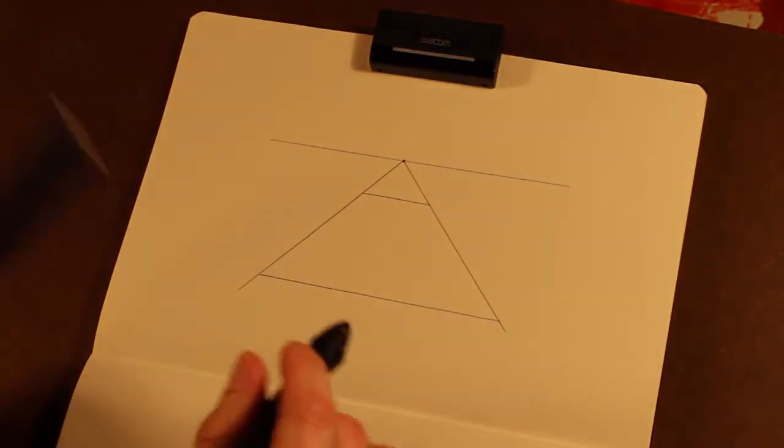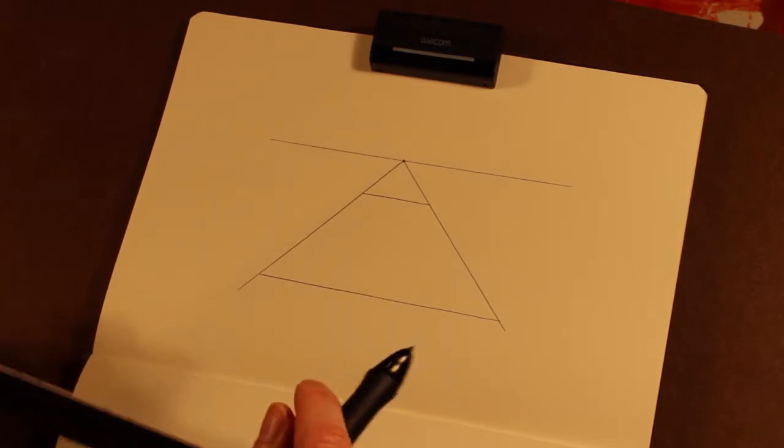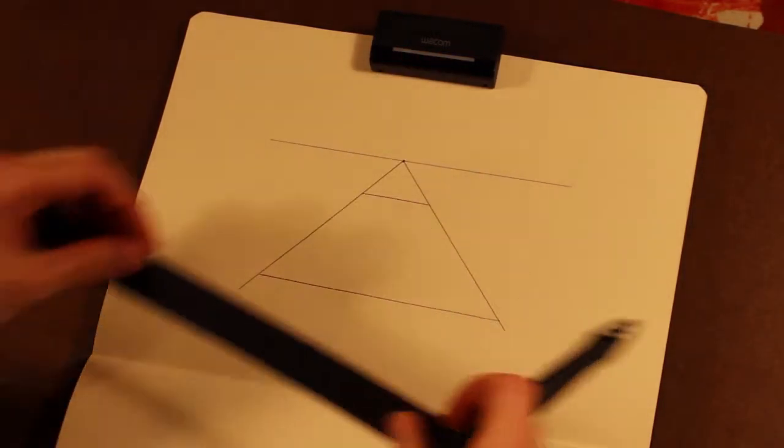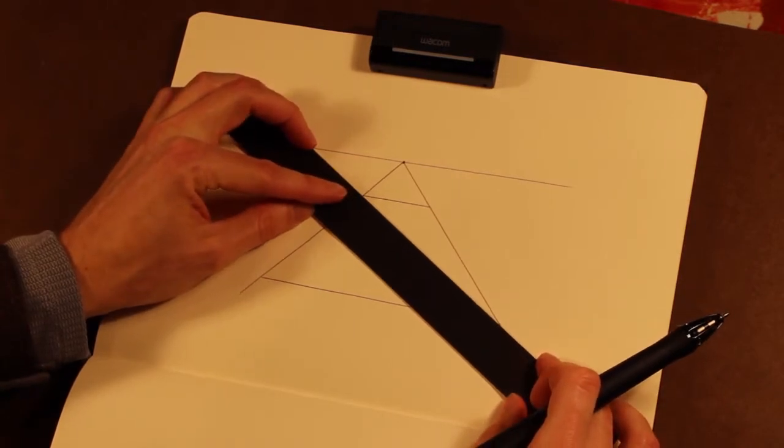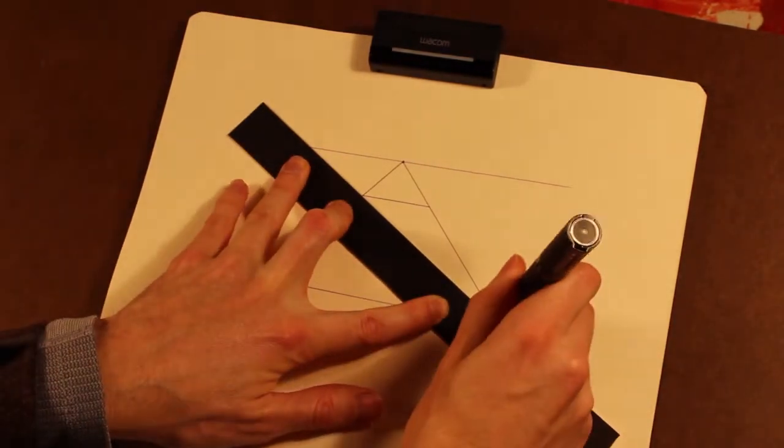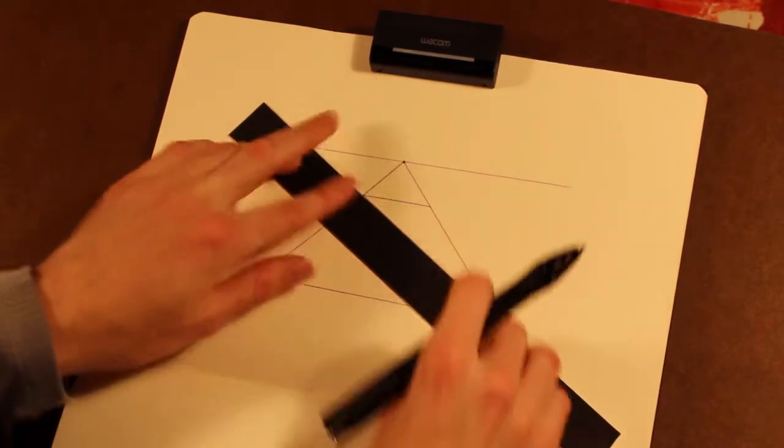So once you have the plane, the centering is ridiculously easy. Now we're going to find this vertical center. All you're going to do is draw an X corner to corner in this plane that you've just created.